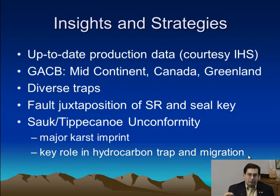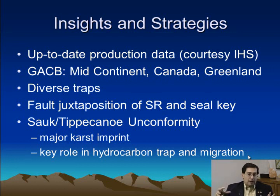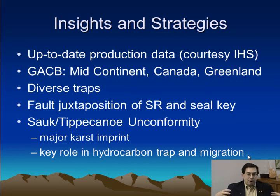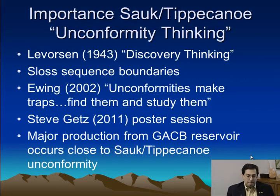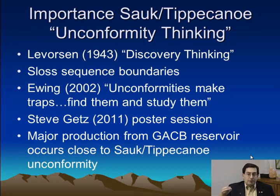One of the main things about the reservoirs in the Great American Carbonate Bank is that they are part of a larger petroleum system with source rocks and sealed strata that are not of the Great American Carbonate Bank, but that are juxtaposed by faults and impinged upon by onlapping of the unconformity and various configurations. So it's very critical to understand much more than the carbonate bank to understand the petroleum system. I would like to coin the phrase 'unconformity thinking' to acknowledge this importance, because it's very clear that the predominant oil and gas production out of the Cambro-Ordovician reservoirs is associated with the unconformity.